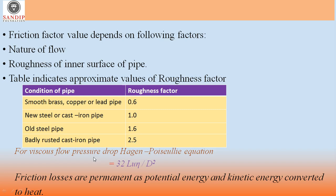For viscous flow, pressure drop is given by the Hagen-Poiseuille equation: ΔP = 32LμU/D², where L is length, U is velocity, μ is viscosity, and D is diameter. The frictional losses that occur are permanent, as potential energy and kinetic energy are converted into heat. Keep in mind that frictional losses are permanent, not temporary.